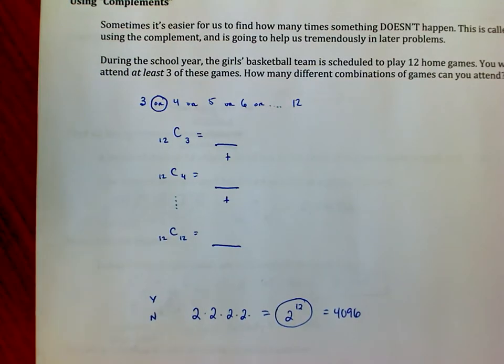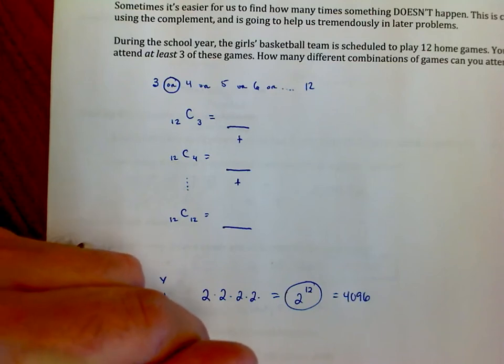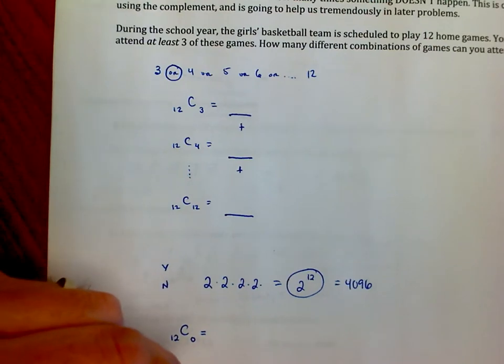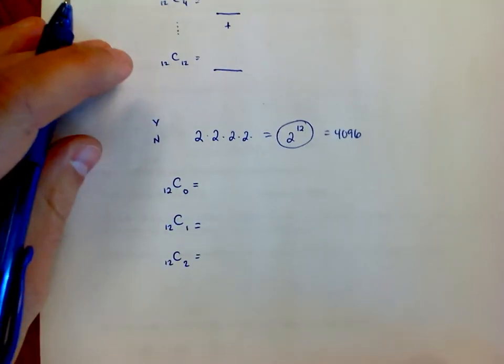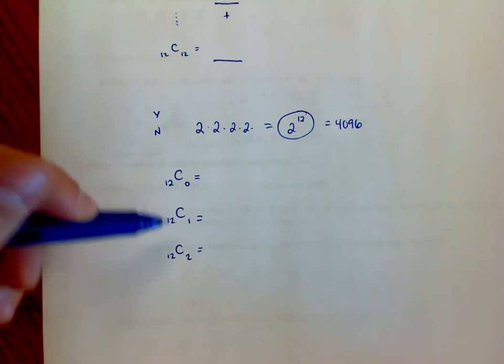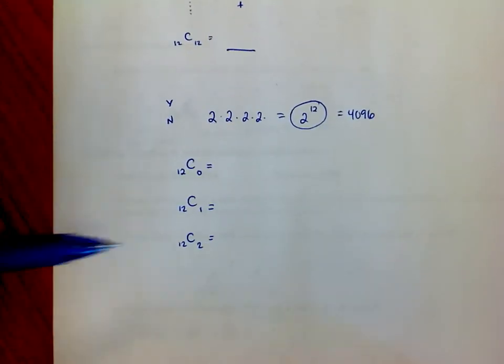So that being said, if I have 4096 choices that could possibly happen, different combinations of choices, now what I could do is say, well then, how many of those choices involve going to zero games, going to one game, or going to two games? Because those would be the ones that don't meet this requirement up above.